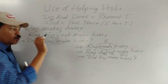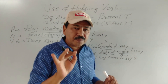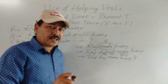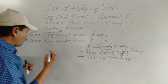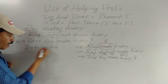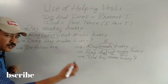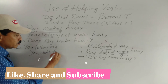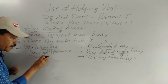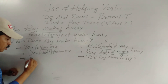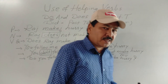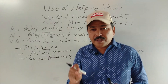रही बात 'do' की — तो वही rules and regulations follow करने हैं। अगर subject third person singular number नहीं है तो 'do' लेना है। Example: 'You follow me.' इसको negative बनाना है तो: 'You don't follow me.' यहाँ 'do not' का contraction 'don't' लिया। और interrogative के लिए: 'Do you follow me?' — to make a verbal question.